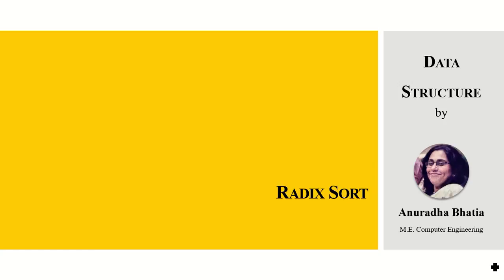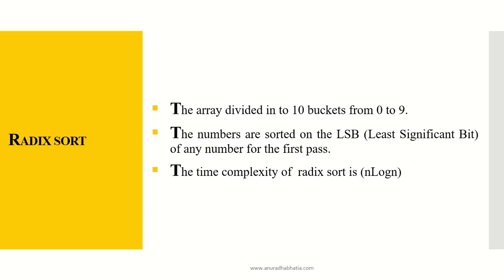Hi, we'll be studying the radix sort algorithm techniques for data structure. Now what is a radix sort? For the radix sort, we divide the array into 10 buckets from 0 to 9. As we specify it has 10 buckets, do not confuse it to be a bucket sort again.